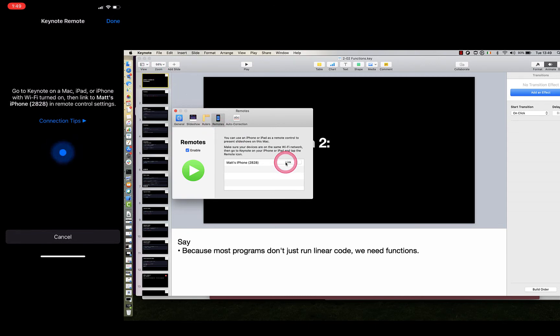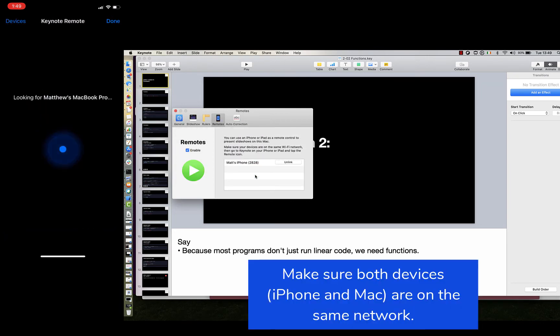In the Remotes tab, now that that was unlinked, I'm going to tap Enable. This is my phone here. I'm going to tap Link. I'll get a code that's the same on both. I'll hit Confirm, and we should be good to go.